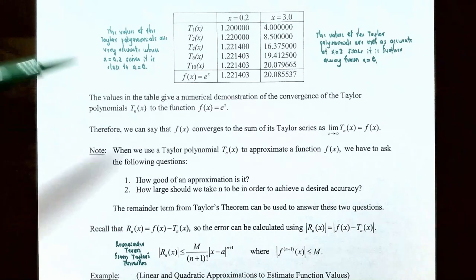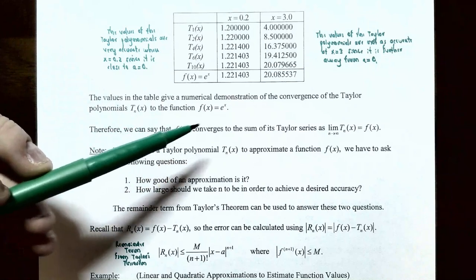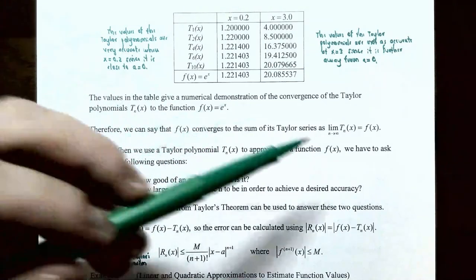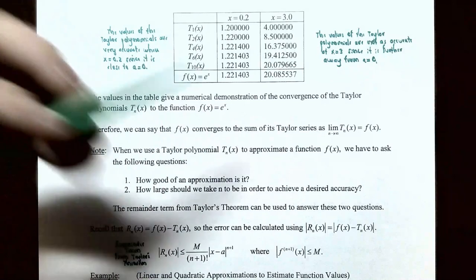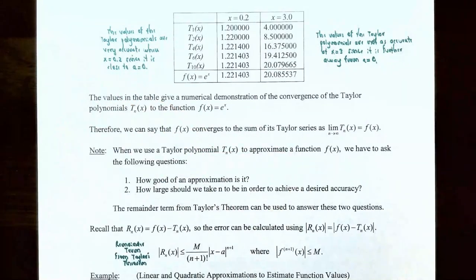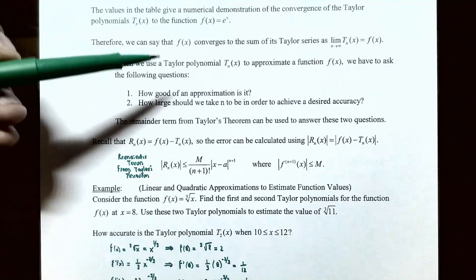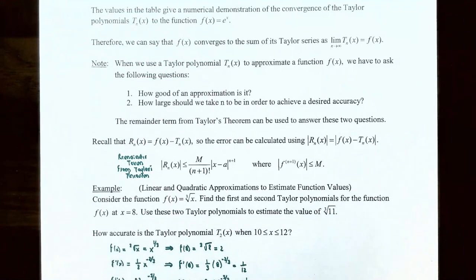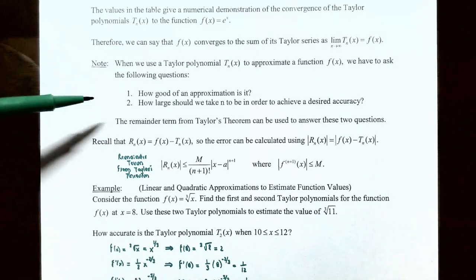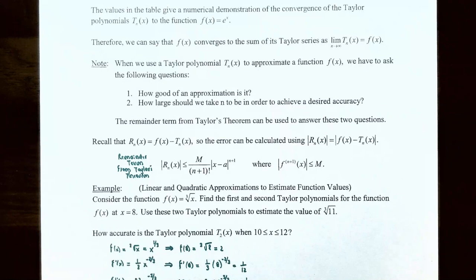We can say that f(x) converges to the sum of the Taylor series as the limit as n approaches infinity of the nth degree Taylor polynomial T_n(x) equals f(x). When we use T_n(x) to approximate f(x), we have to ask two questions: one, how good of an approximation is it? And two, how large should n be in order to achieve a desired accuracy? The remainder term from Taylor's theorem can be used to answer both of these questions.